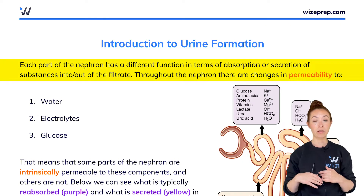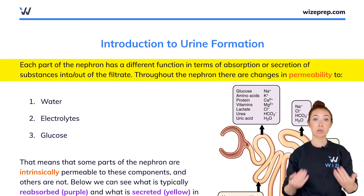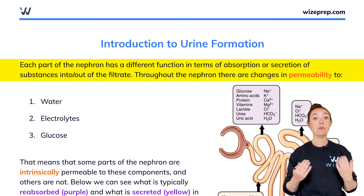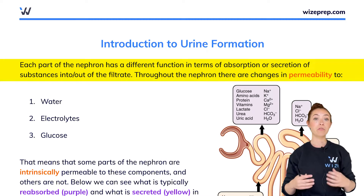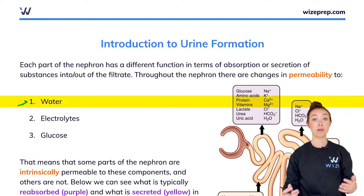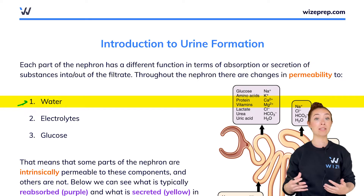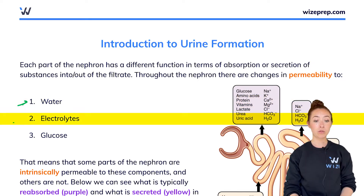Each part of the nephron is going to have a different function in terms of what they absorb or reabsorb from the filtrate and what they secrete. The reason for these changes is because different sections of the nephron have different permeabilities. Some parts of the nephron are really permeable to water while others are not permeable to water at all, so they can't absorb any water from the filtrate passing through that section. They also have different permeabilities to different electrolytes as well as things like glucose.